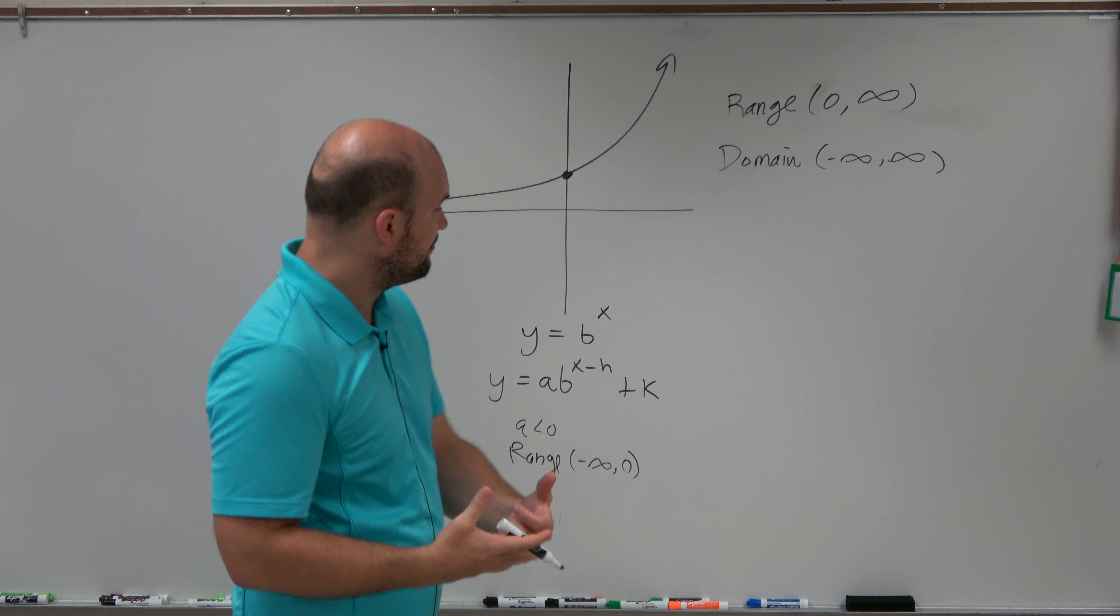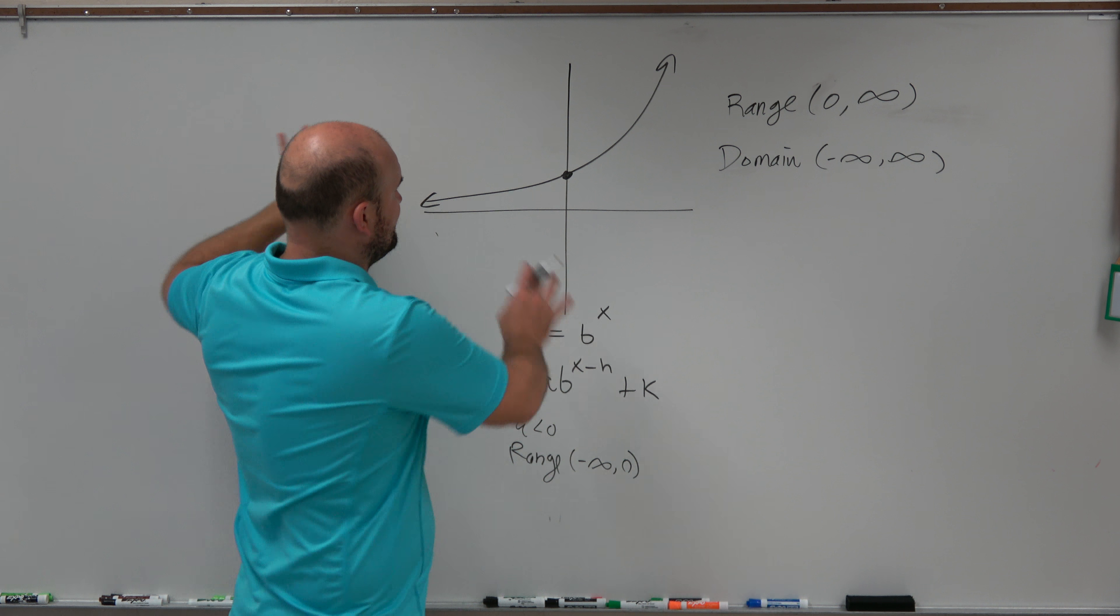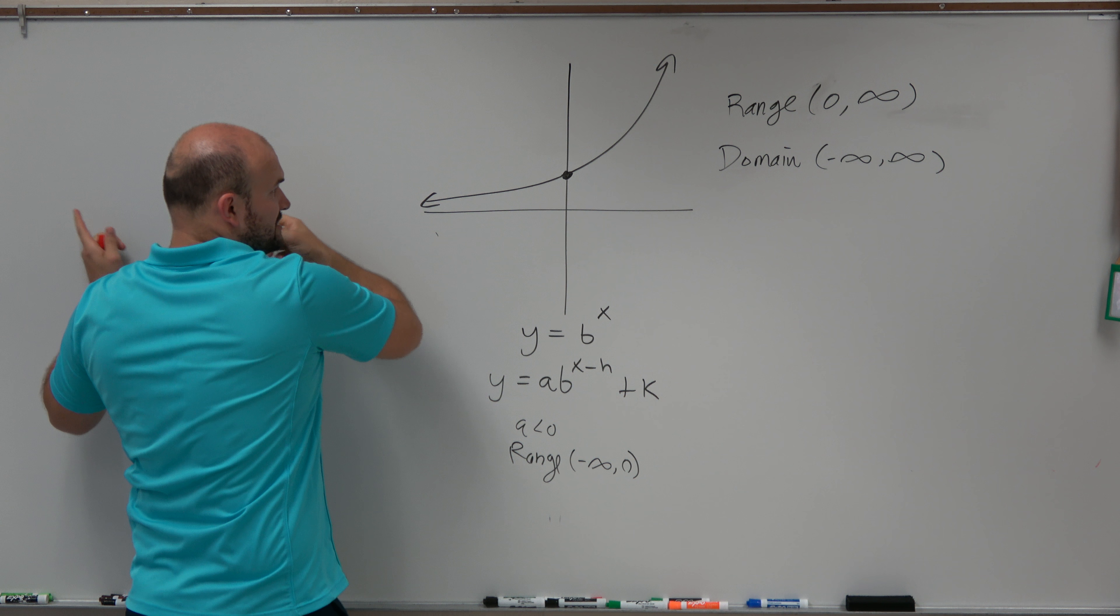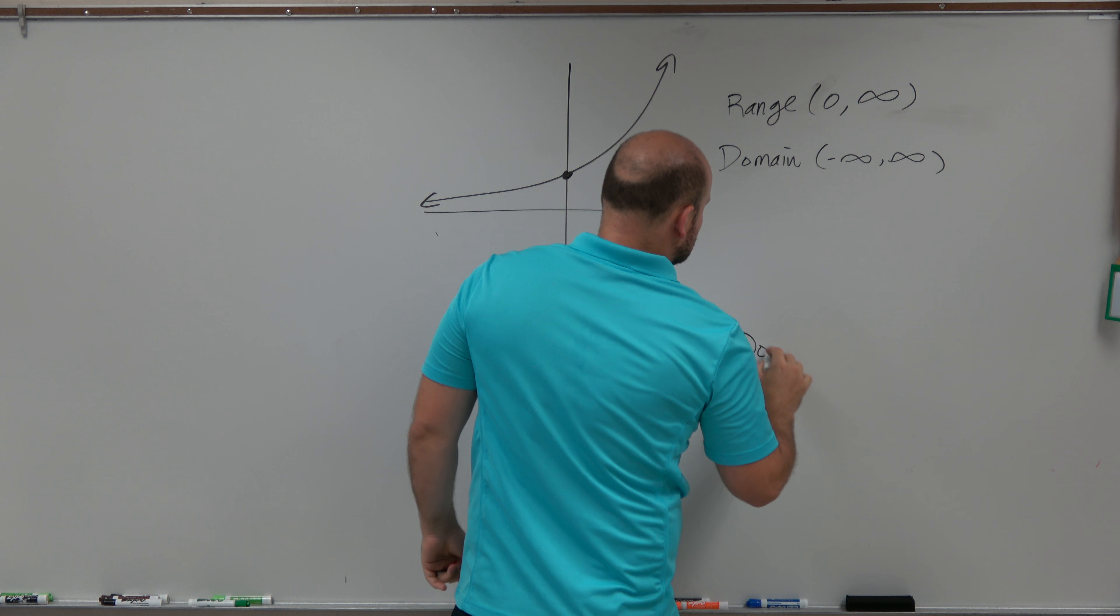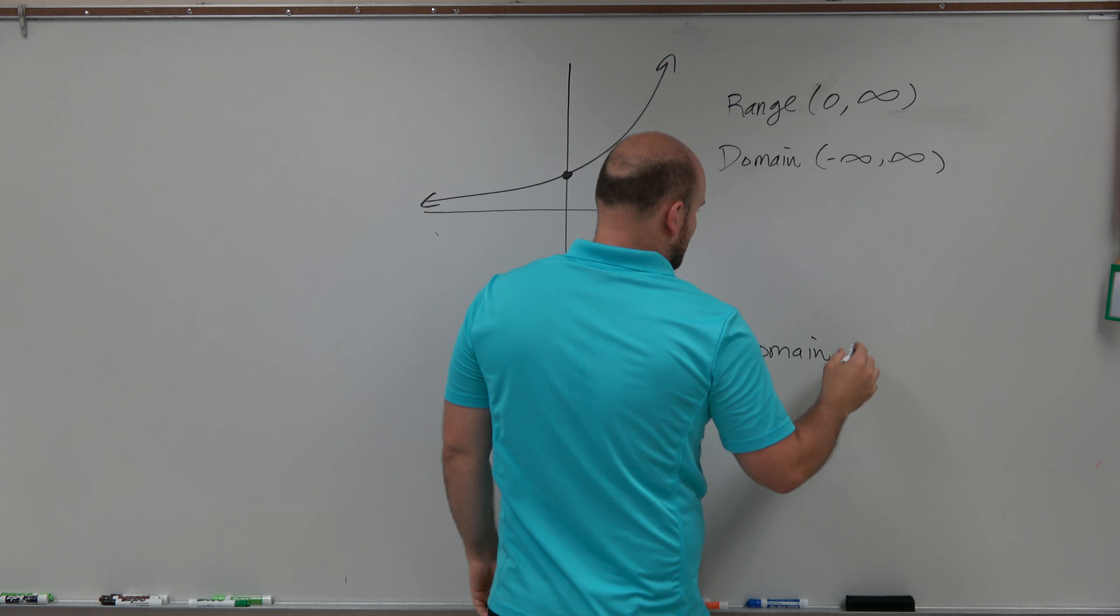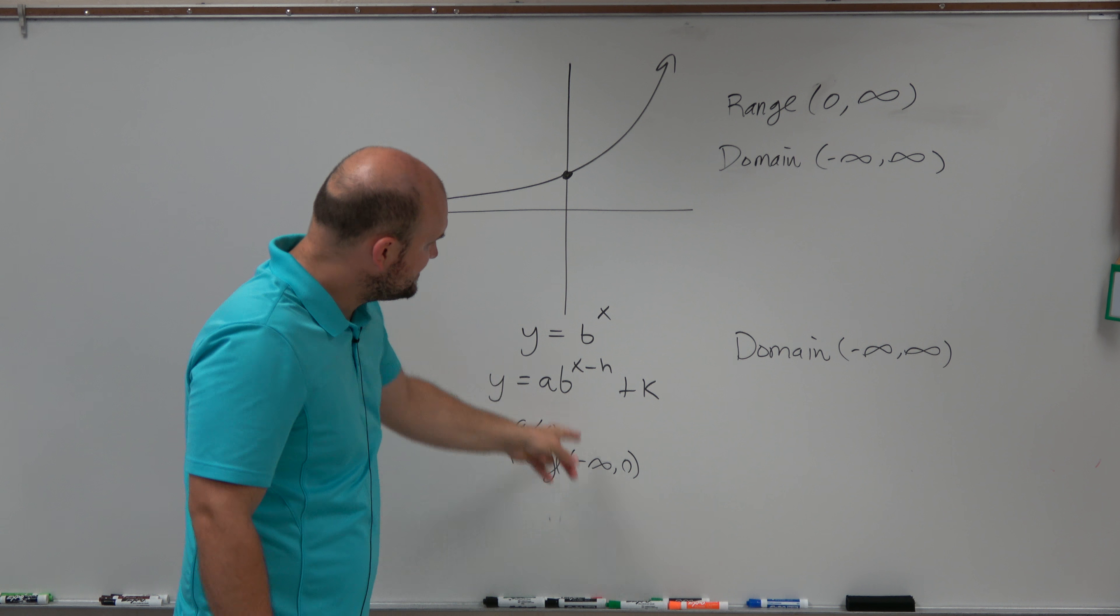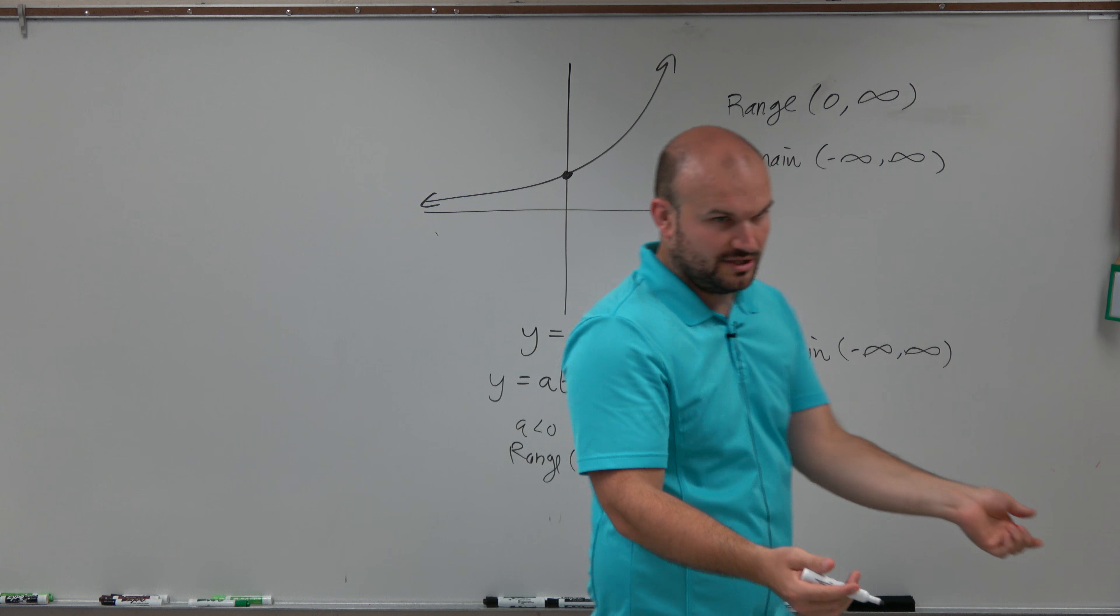The other transformation that is important is if I shift this graph to the right or if I shift this graph to the left, the graph is still going to go to the left and it's still going to go to the right. So the domain of my transformation graph is always going to be negative infinity to infinity. It doesn't matter, even if I reflect the graph, it's always going to go to the left and always going to go to the right.